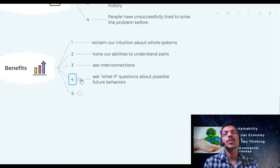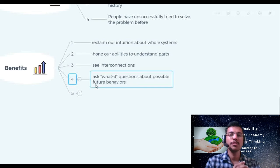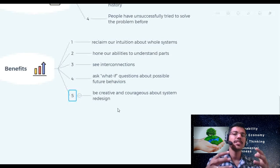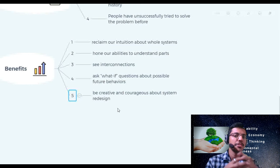Third is to see the interaction between the dynamic system behavior of these elements. Then fourth is ask what if questions about possible future behaviors. This is very, very important when we design a system, when we design a solution by keeping the future perspective into consideration. And the fifth point is be creative and courageous about system redesign. For redesigning purposes, creativity and being courageous is very important, and systems thinking can be a game-changing tool.